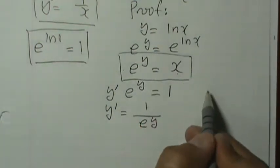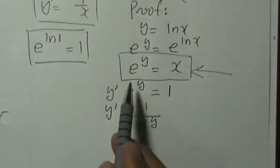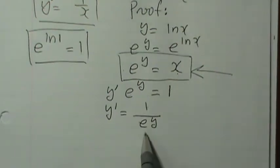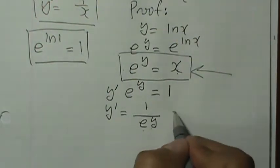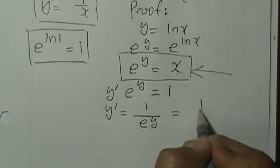Now, we know from here, right there, that e to the power of y is x. So let's substitute for e to the power of y, x. So this would equal y prime equal to 1 over x.